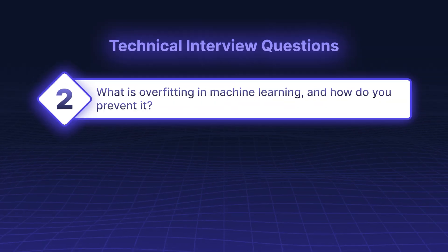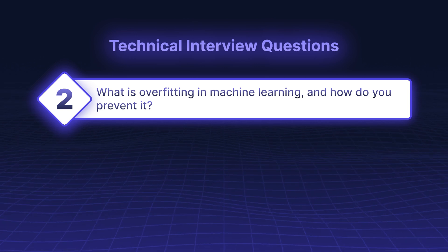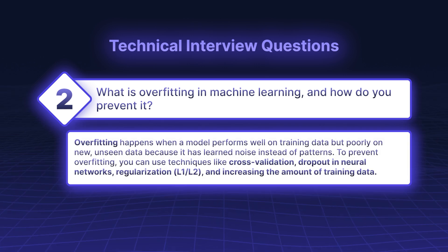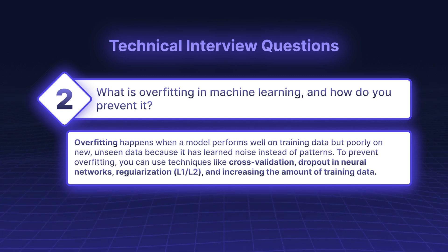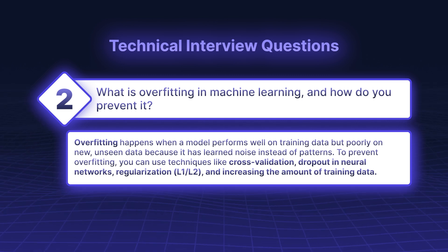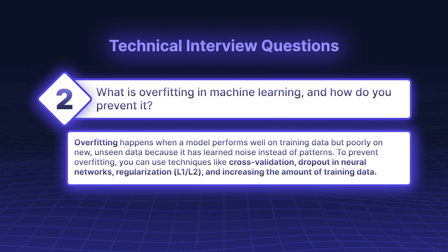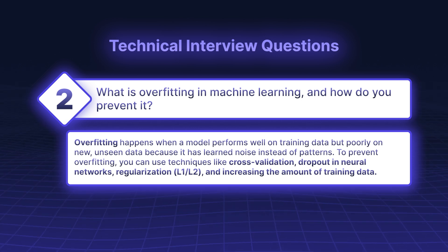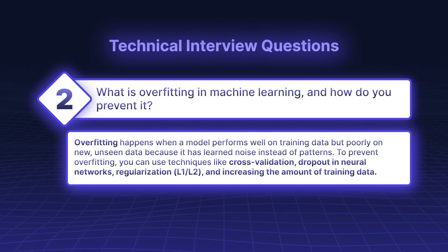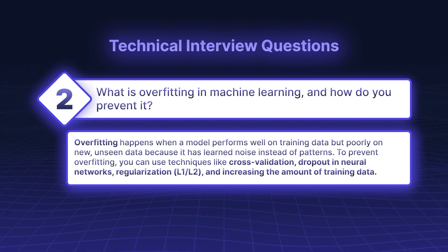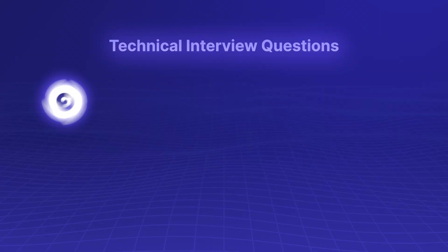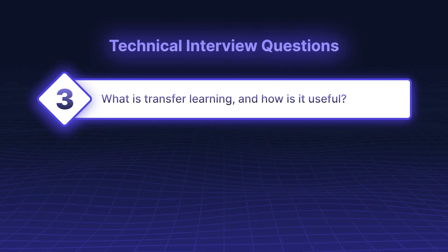What is overfitting in machine learning and how do you prevent it? Overfitting happens when a model performs well on training data but poorly on new, unseen data because it has learned noise instead of patterns. To prevent overfitting, you can use techniques like cross-validation, dropout in neural networks, regularization (L1/L2), and increasing the amount of training data.